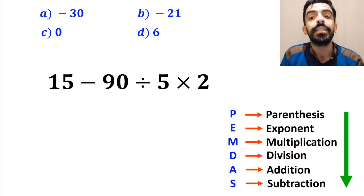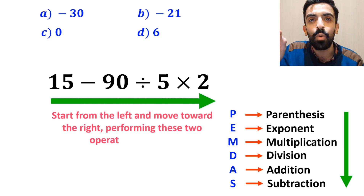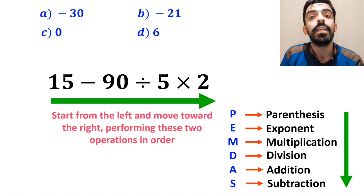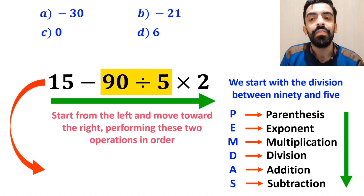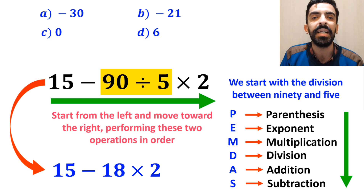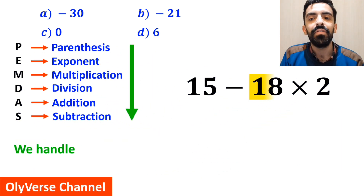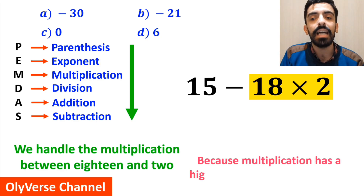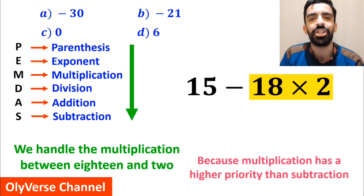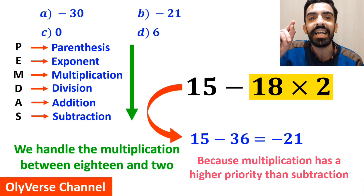In this situation, the best approach is to start from the left and move toward the right, performing these two operations in order. So first we start with the division between 90 and 5, which simplifies this expression to 15 minus 18 multiplied by 2. In the next step, we handle the multiplication between 18 and 2, because multiplication has a higher priority than subtraction. And this expression simplifies to 15 minus 36, which finally gives us the answer negative 21.